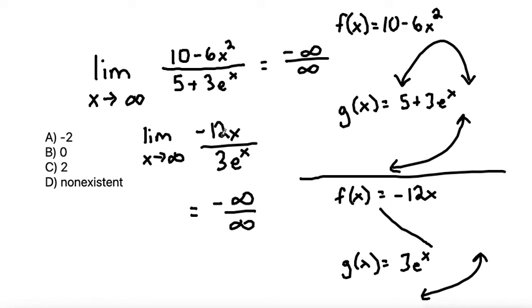So we can use L'Hopital's rule as many times as we get that indeterminate form 0 over 0 or infinity over infinity. Okay, so taking L'Hopital's rule again and taking the derivative of the top and the derivative of the bottom. The derivative of negative 12x is negative 12, and the derivative of 3e to the x is again 3e to the x.